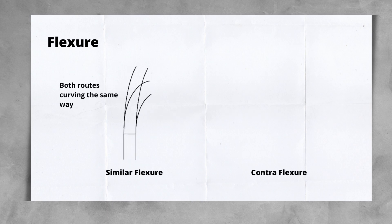In a similar Fletcher turnout, the through route is curved in the same direction, or hand, as the turnout. This has two main effects: it means that the turnout radii tightens, while also making it likely that the junction will be canted. For more on cant, check out our video at the link in the top right-hand corner.